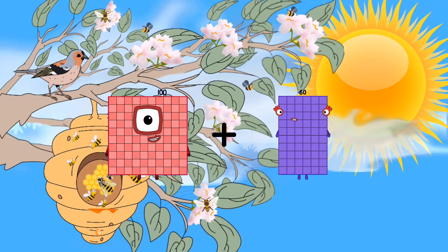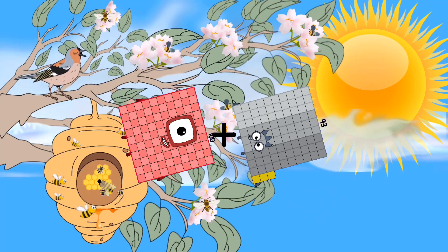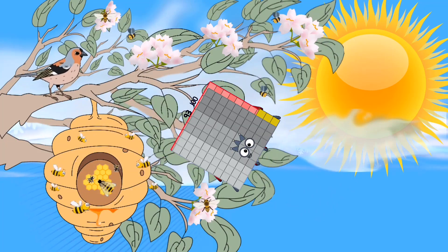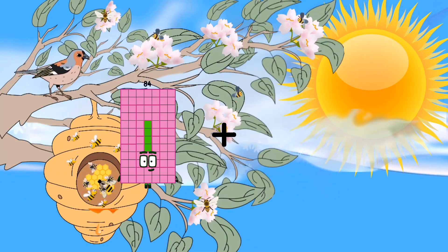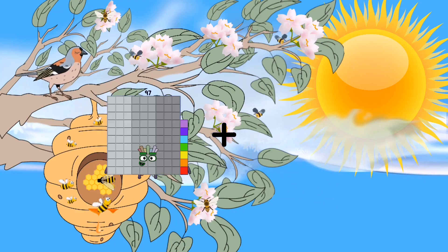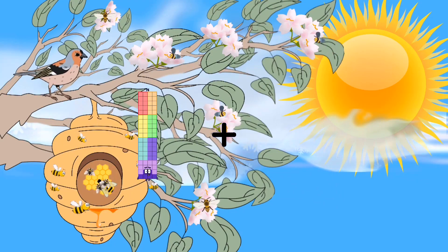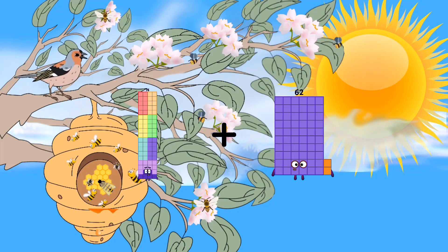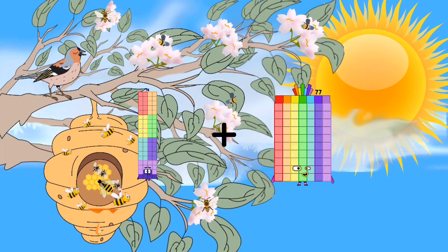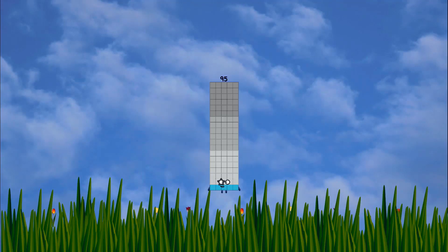100 plus 93 equals 193. 76 plus 19 equals 95.